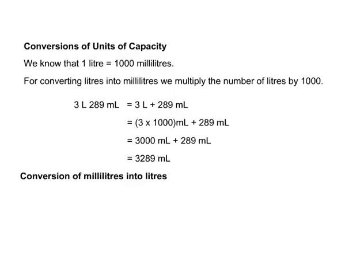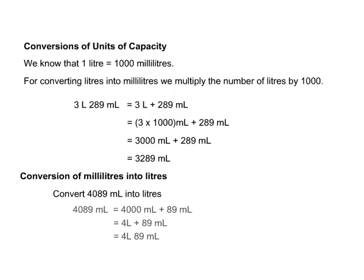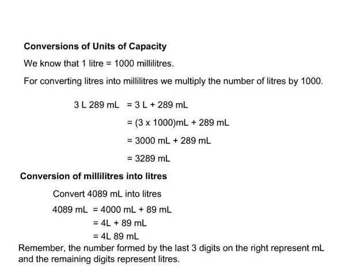Let us understand conversion of milliliters into liters with an example. Convert 4,089 milliliters into liters. Remember, the number formed by the last 3 digits on the right represents milliliters and the remaining digits represent liters. So 4,089 ml equals 4 liters and 89 milliliters.